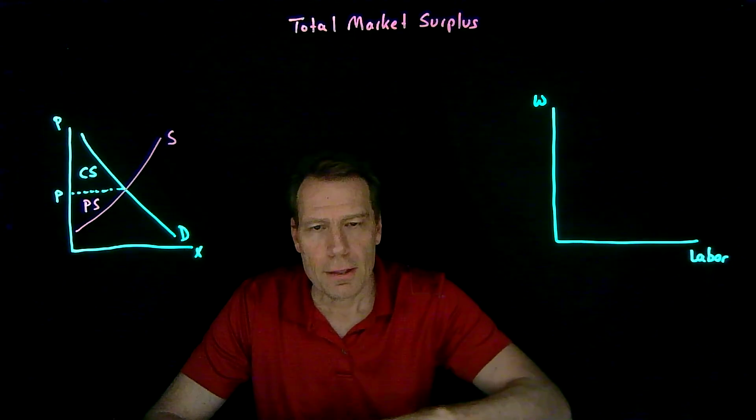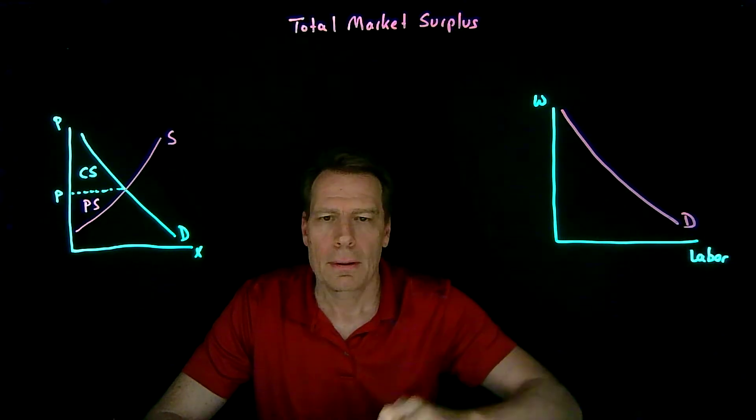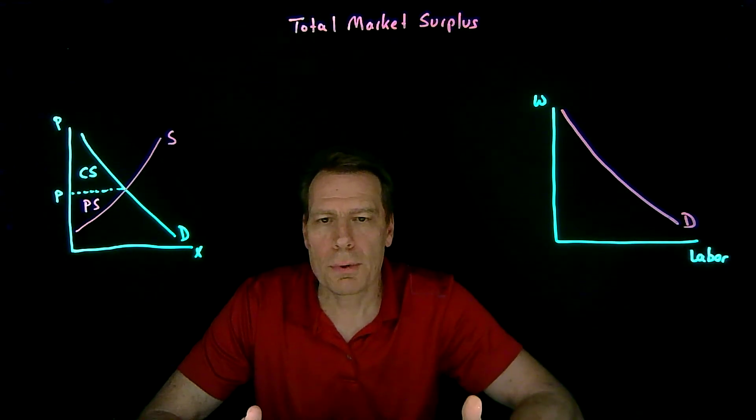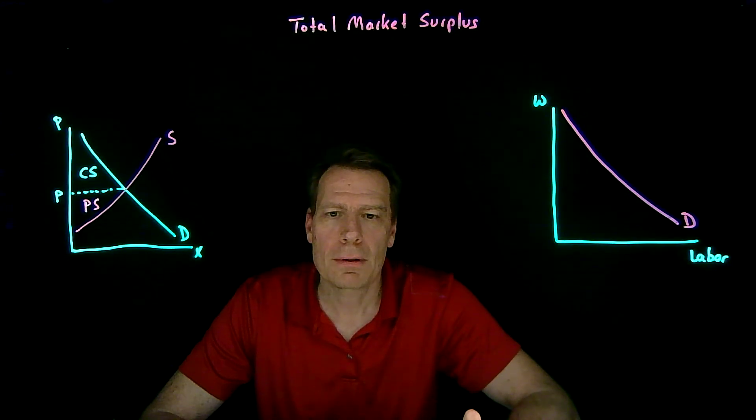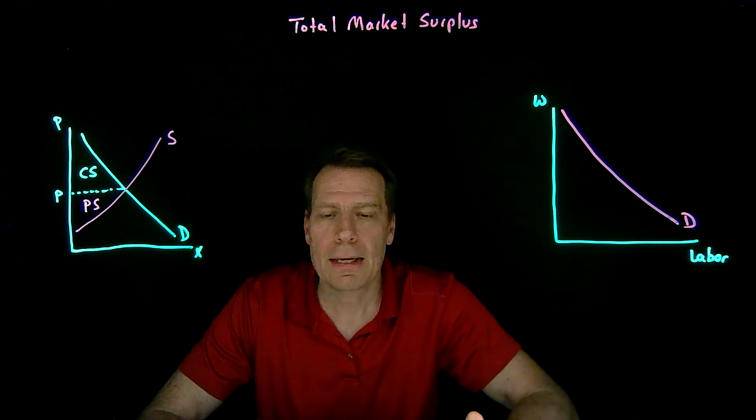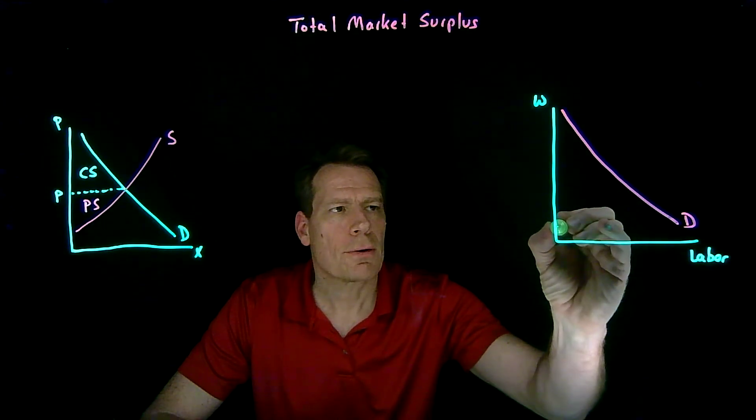In this case, the firms would be the demanders. Firms demand labor. And consumers choose between consuming or leisuring and whatever leisure they don't consume, they end up working. So from the consumer model, we get the labor supply curve.